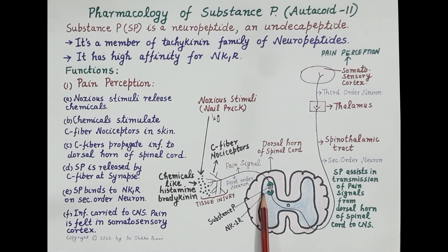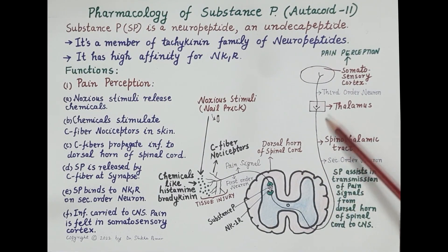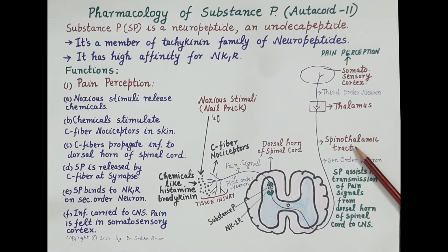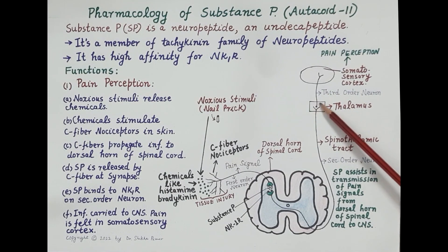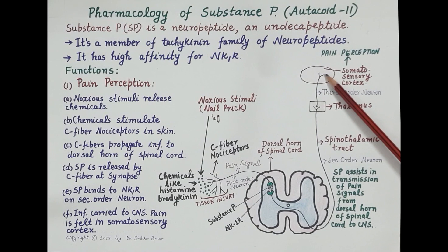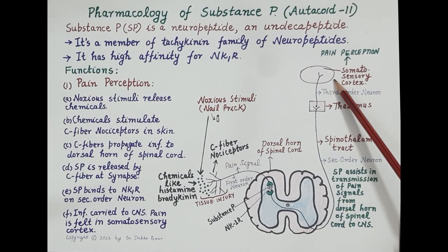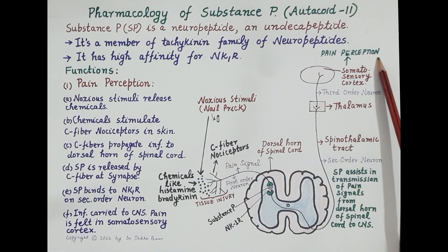Substance P is released by C-fibers at the spinal synapse. This substance P binds to neurokinin-1 receptors on the second order neuron. The second order neuron passes this information to the thalamus via the spinothalamic tract. This is followed by stimulation of the third order neuron, which carries information from the thalamus to the somatosensory cortex of the brain where pain is felt.